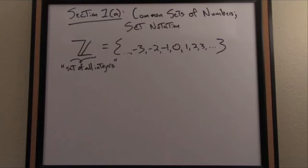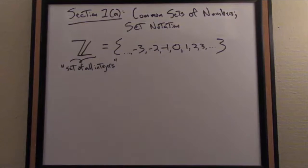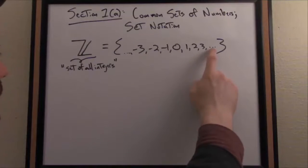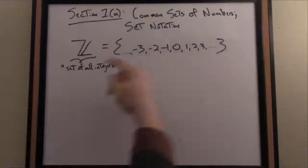So there is set notation for the set of all integers. I've separated the elements, or sometimes called the members of the set, by commas. On the ends, I've book-ended this description with what's called ellipsis.